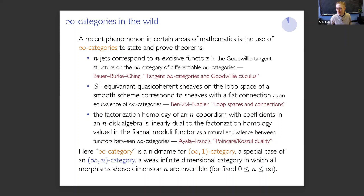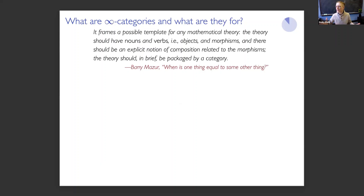To explain what these infinity categories are and what they're for, there's a lovely metaphor of Barry Mazur, written in an essay that was a tribute to Saunders MacLane. He describes ordinary categories — ordinary one-dimensional categories — as something that frames a possible template for any mathematical theory. The theory should have nouns and verbs: objects and morphisms. There should be an explicit notion of composition relating these morphisms. The theory should, in brief, be packaged by a category.